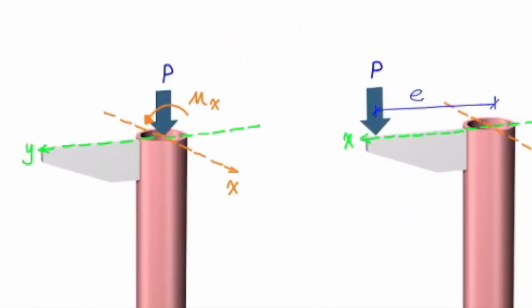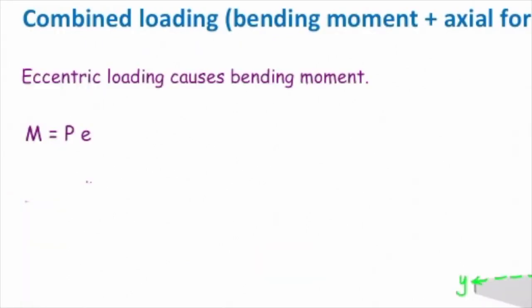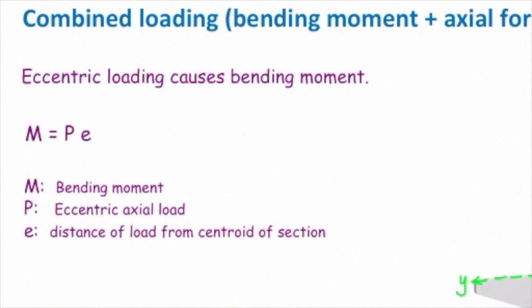This moment, M_x, is acting about the x-axis. Use the right-hand rule — the thumb shows the direction of the x-axis, so the moment is acting about the x-axis. The magnitude of the eccentric moment is simply force times the distance of that force to the centroid, which in this case is E. So M = P × E. M is the eccentric moment, P is the eccentric load or axial force, and E is the distance of the load from the centroid of the section.